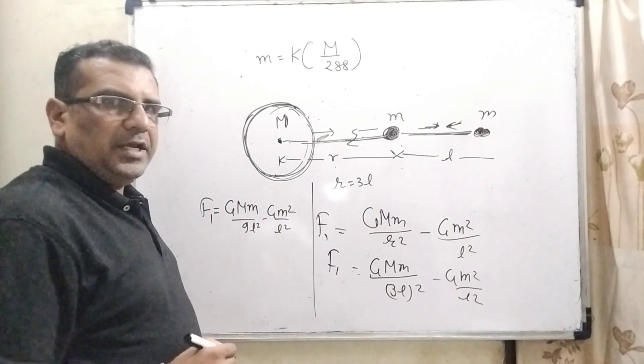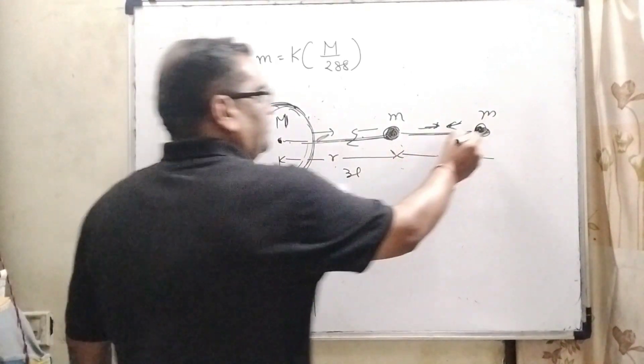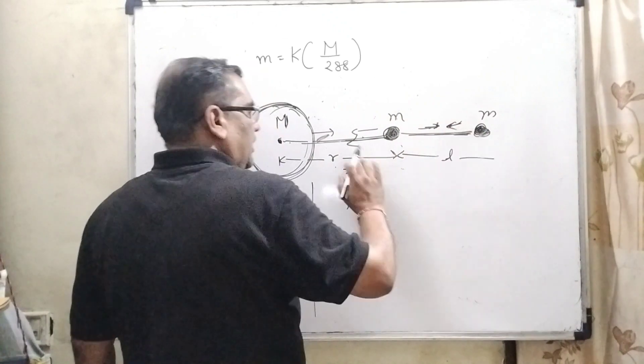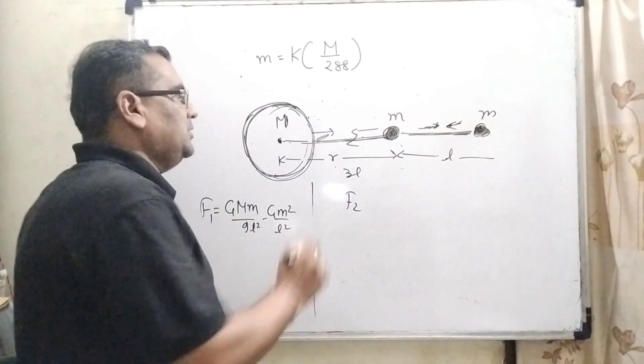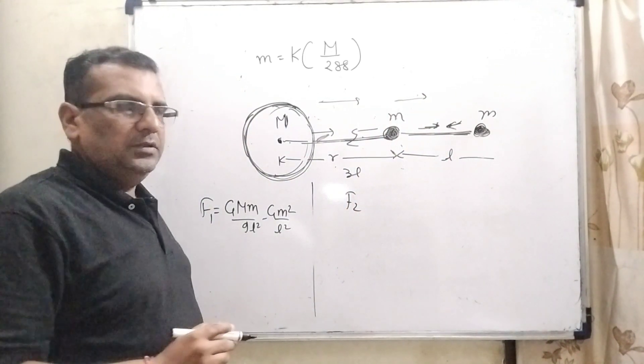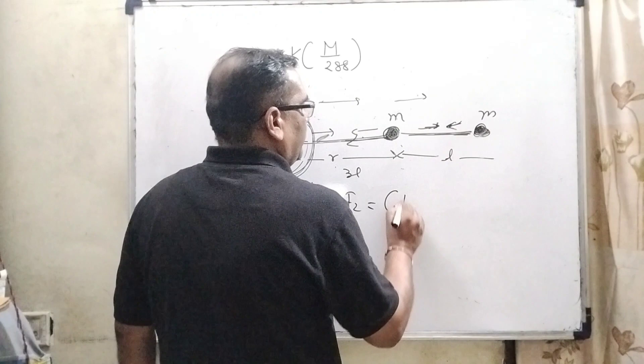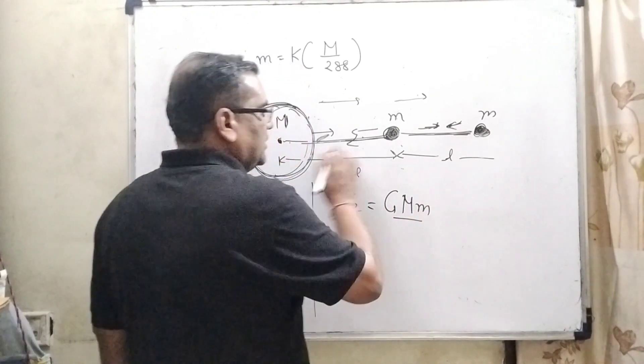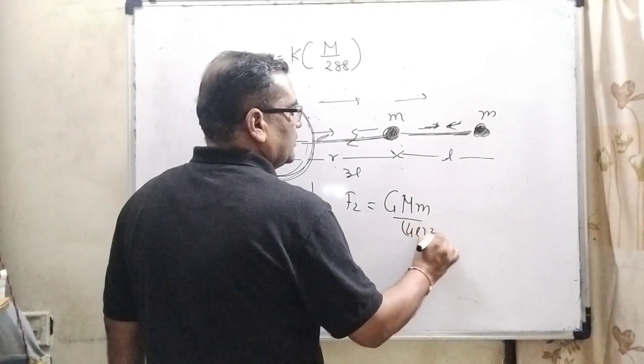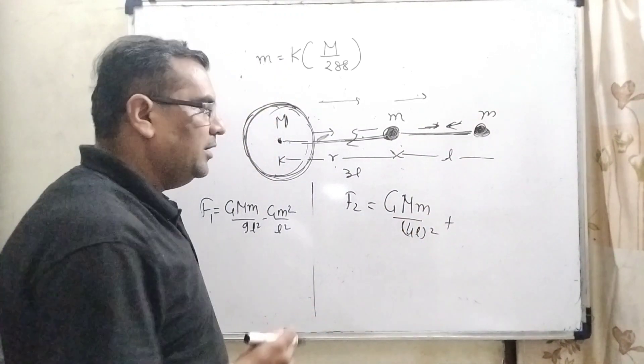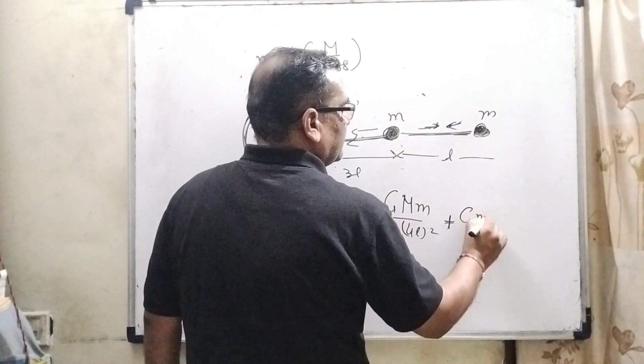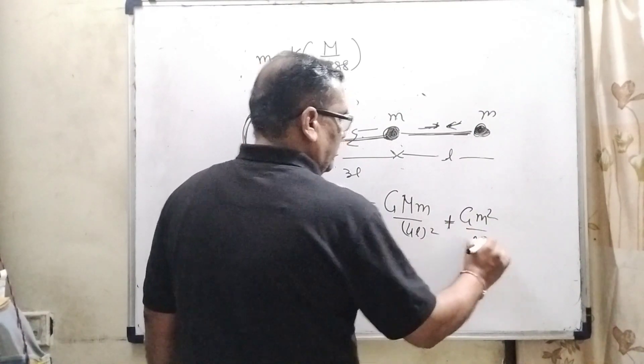And for the second condition, now here we have to find out the attraction force for the bigger point to this point and attraction force to this point. Because this is the same direction, we have to take addition. So now F2 equals G capital M small m, and the full distance is 3L plus L, so it becomes 4L square, plus—why we have taken plus? Because the direction is the same—plus G M square upon L square.